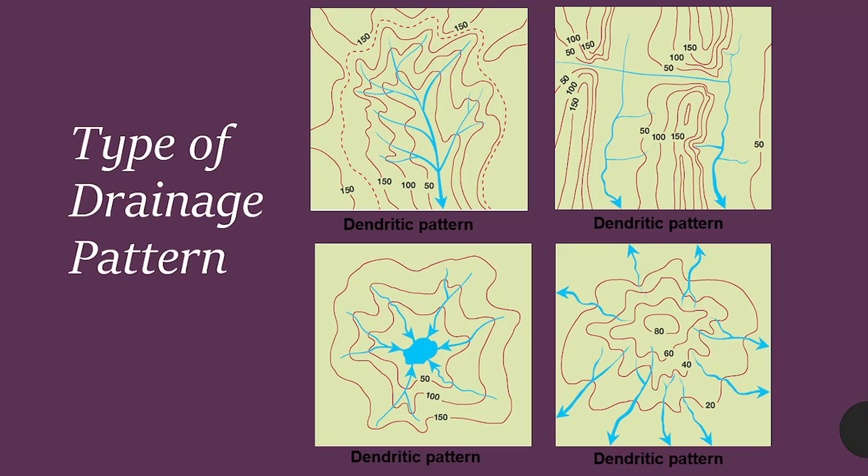Types of drainage patterns. We have dendritic patterns, which you may be more familiar with seeing when it comes to rivers. It's what most people would think of. You have another form of dendritic patterns. See that they're all labeled as dendritic patterns. But, don't mind that. If you have any questions after class, I can clarify that. Moving forward.